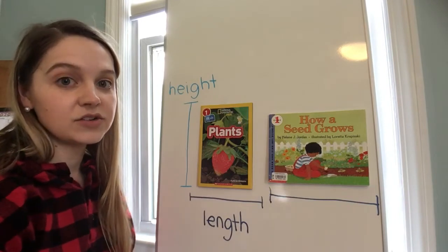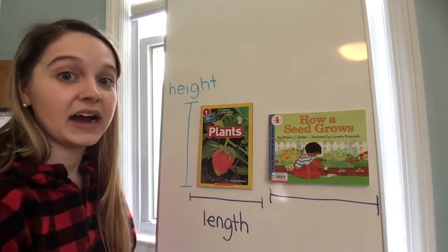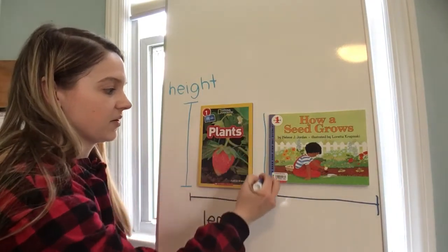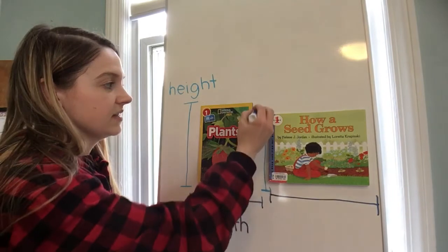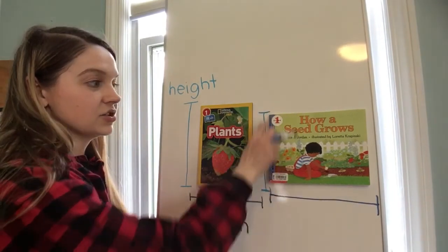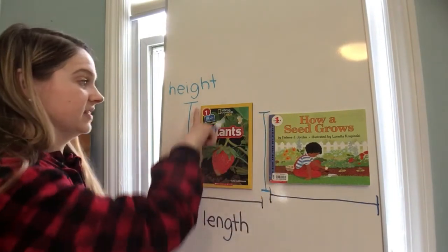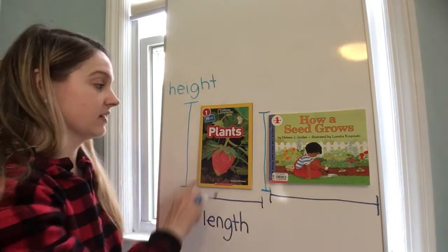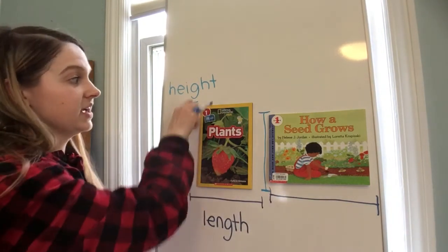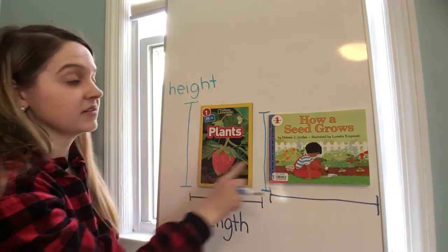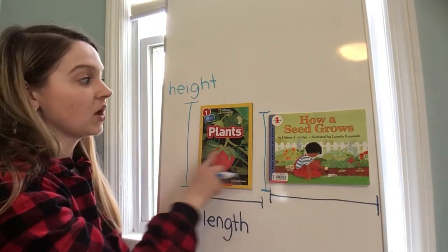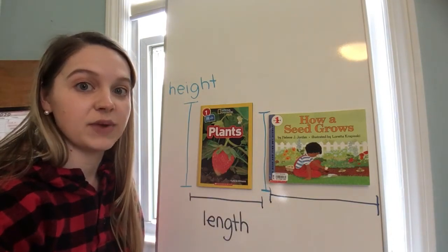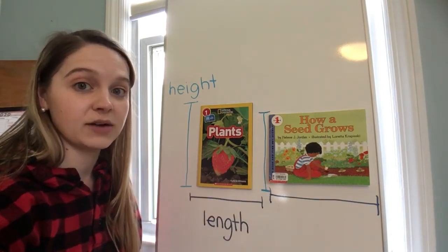We can also use different words to compare the height of two objects. If I look at this book over here, this book is shorter than this book. I can also say that this book is taller than this book. Taller and shorter are going to be the different words that we use to compare the height of two objects.